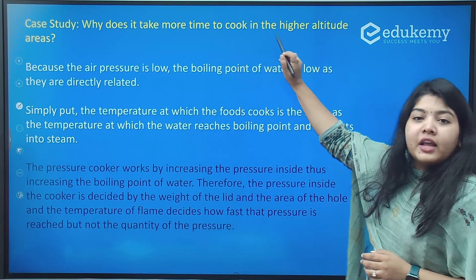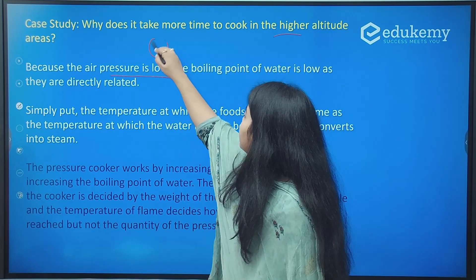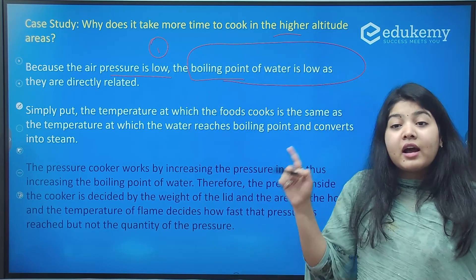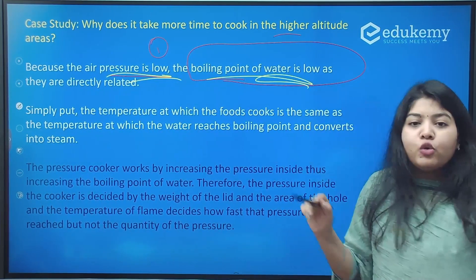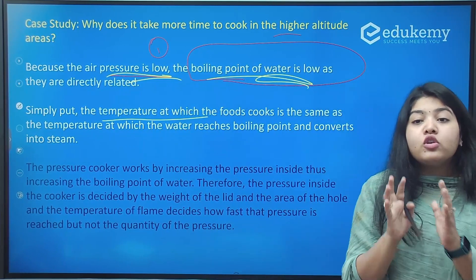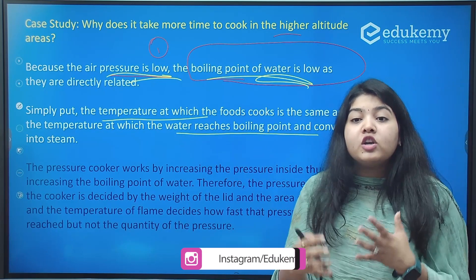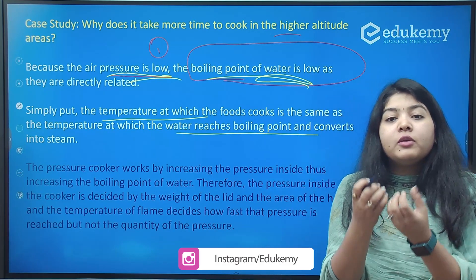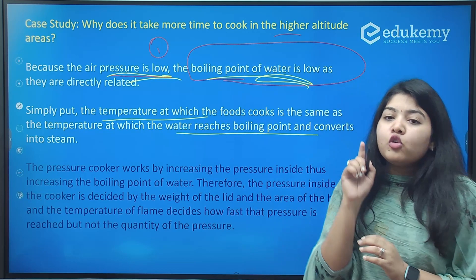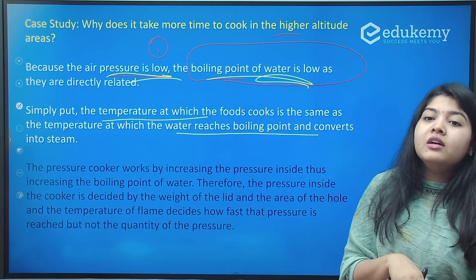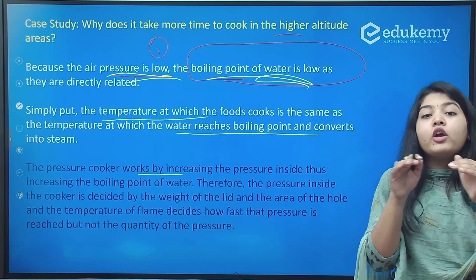Why does it take more time to cook in the higher altitudes? First, because the air pressure is low, the boiling point of the water is low as they are directly related. So the air pressure is directly related to the boiling point. Simply put, the temperature at which the food cooks is the same as the temperature at which the water reaches boiling point and converts into steam. So it is not that the flame will be higher so the boiling point will be higher - no, it might reach that boiling point faster but it will not determine the temperature at which the cooking will start.